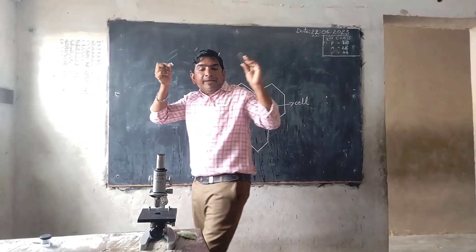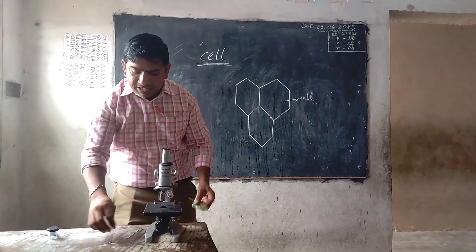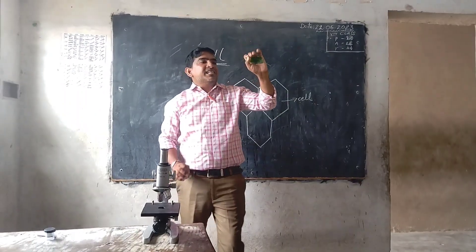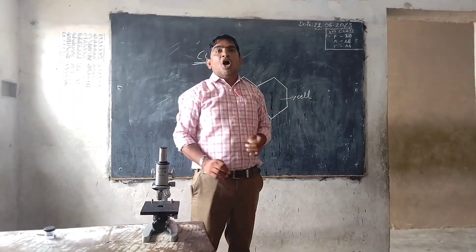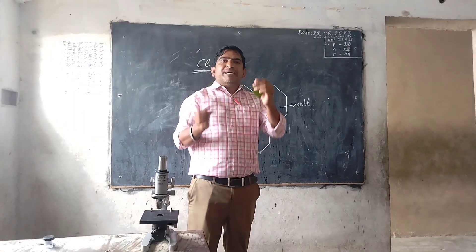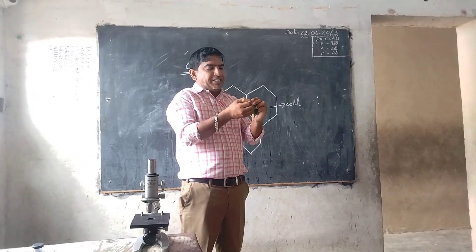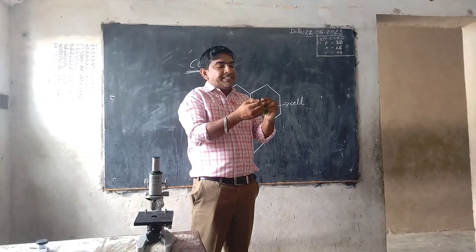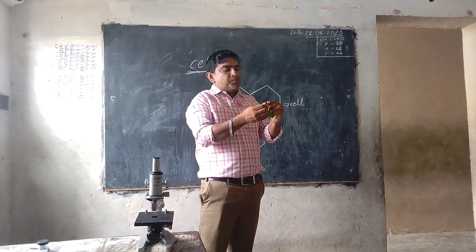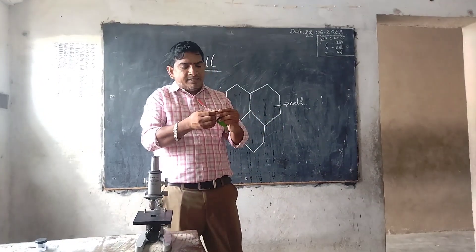By using these three — the microscope, slide, and coverslip — we can see cells. I want to see the cells of a plant, specifically from a small stem. Using a blade, we carefully remove a very small, thin, narrow piece from the stem. That small piece is then placed onto the slide.